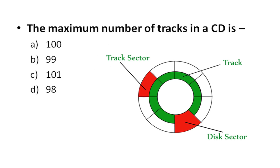The next question: What is the maximum number of tracks in a CD? A CD is divided into tracks and sectors. The options are 100, 99, 101, and 91. The right answer is 99 — a CD has a maximum of 99 tracks.